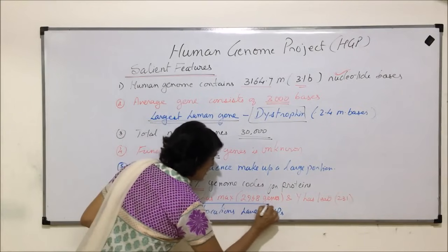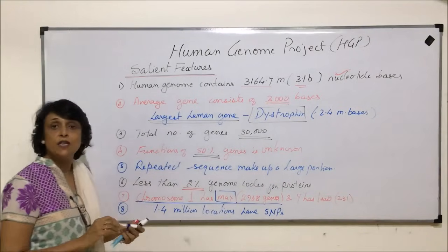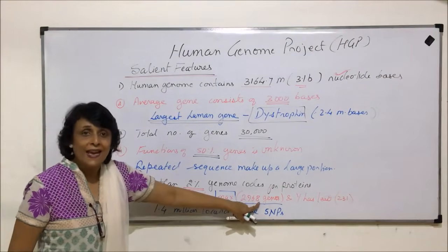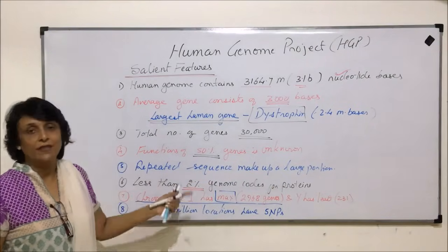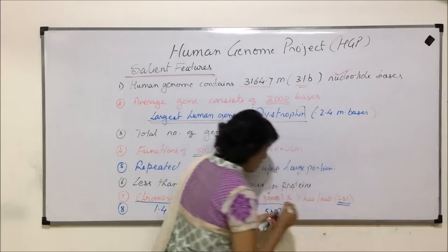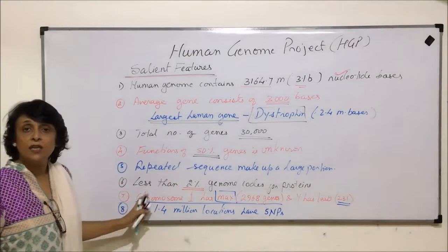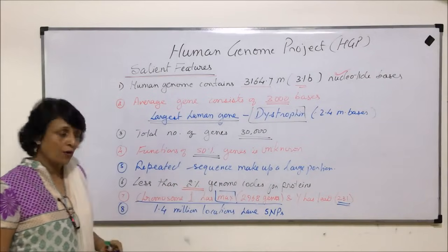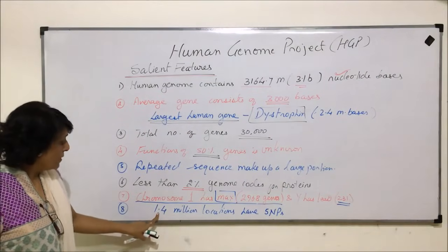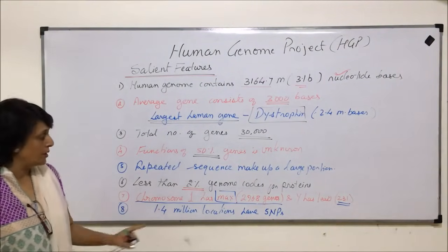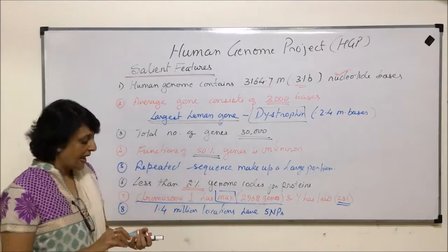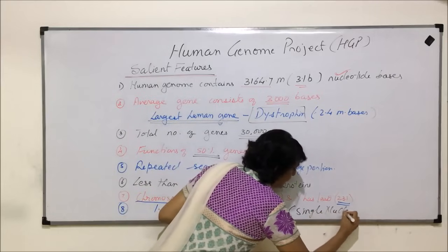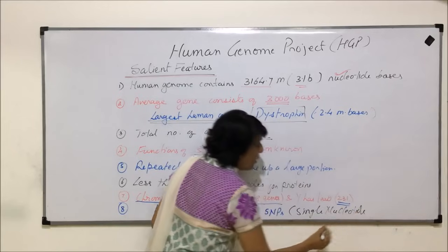Chromosome number one has the maximum number of genes — 2968 genes — and the Y chromosome has the minimum number of genes, which is 231. So chromosome number one has the maximum and the Y sex chromosome has the least. At 1.4 million locations we find SNPs — Single Nucleotide Polymorphisms.